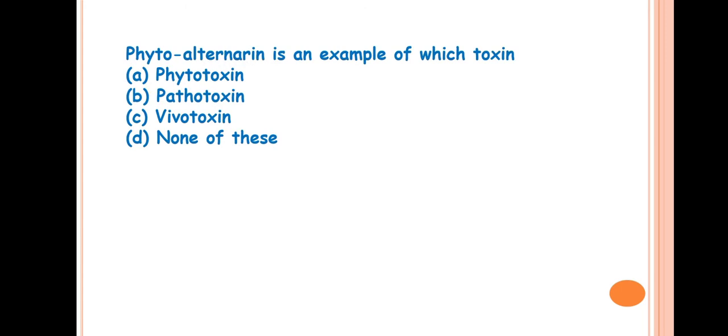Next question. Phytoalternarin is an example of which toxin? Answer is Vivotoxin. Phytoalternarin is produced by the fungus Pyricularia oryzae that is causing the rice blast disease.